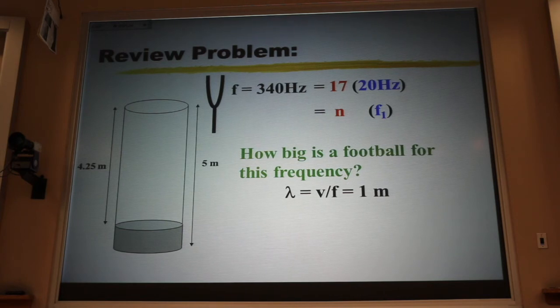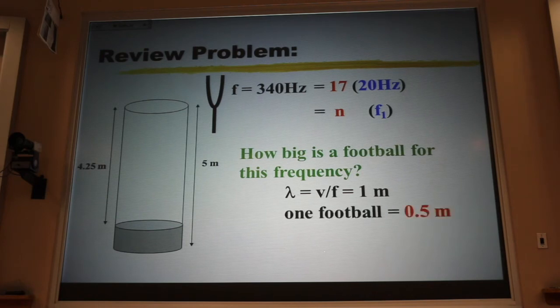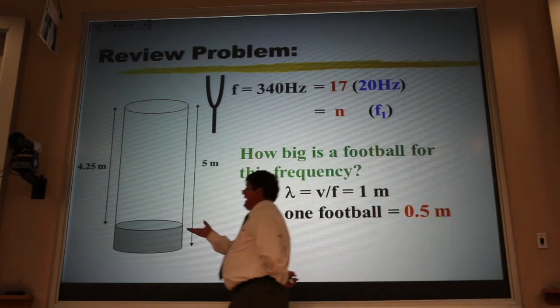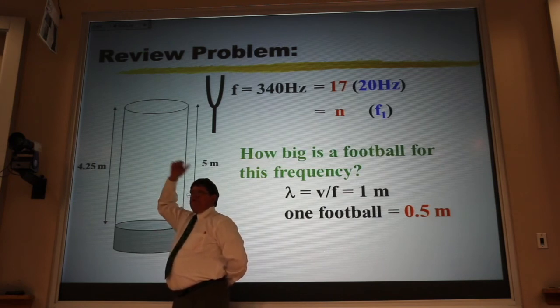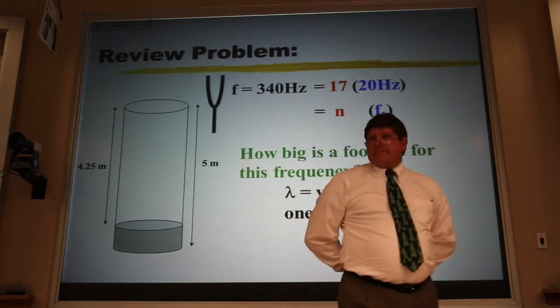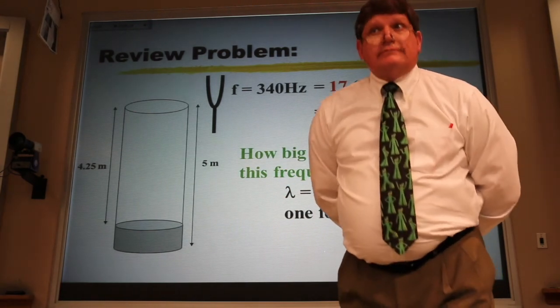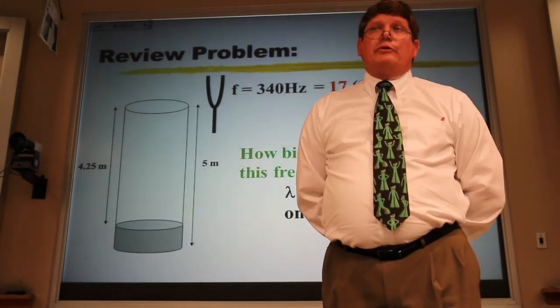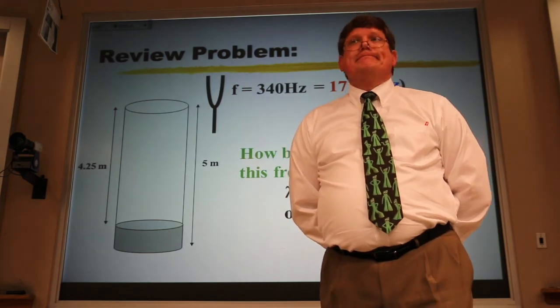But that's two footballs. A wavelength is two footballs, and so that means one football is half a meter. And so the other way to do it is just ask yourself, how many half meters do I have in four and a quarter meters? Eight and a half. You could set up a proportion. That's all I'm doing is proportional reasoning.